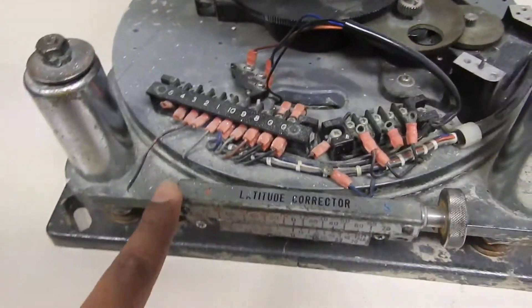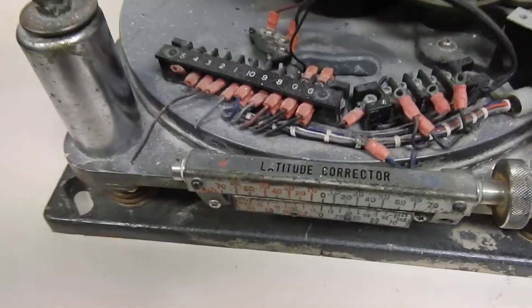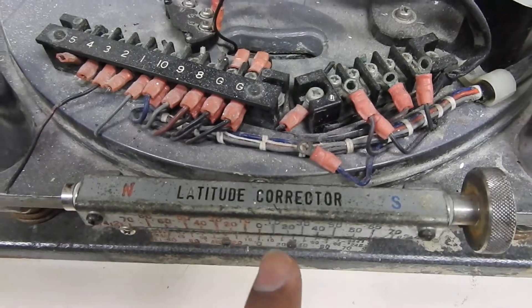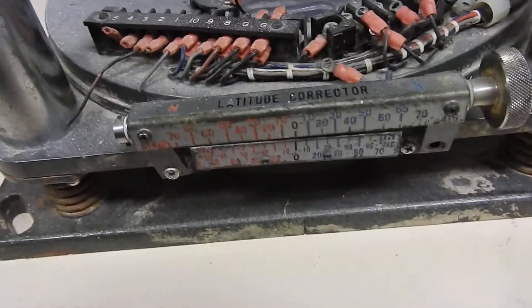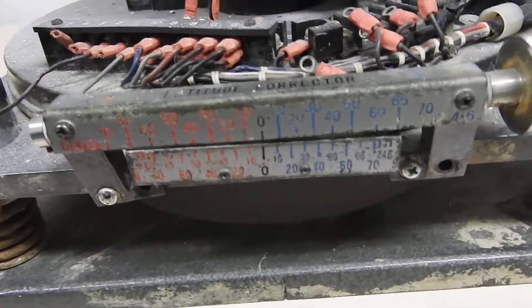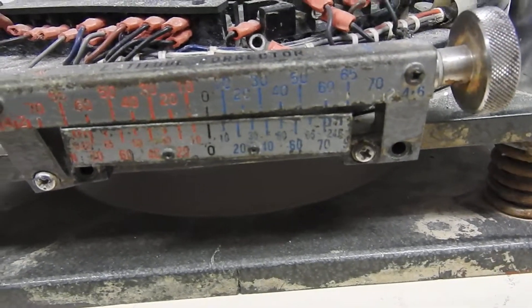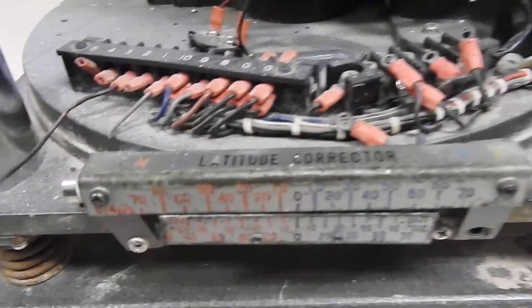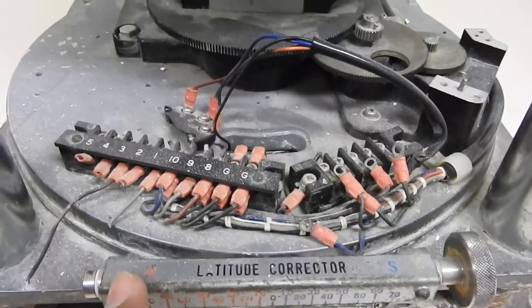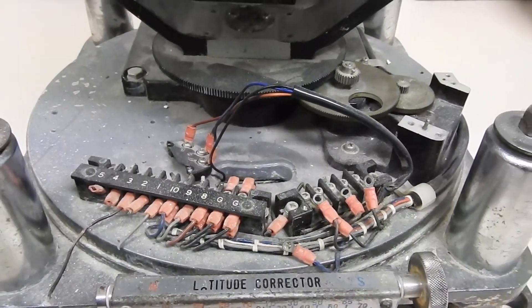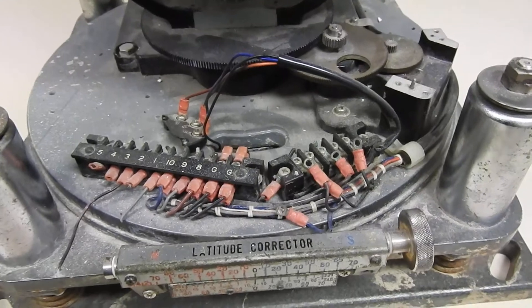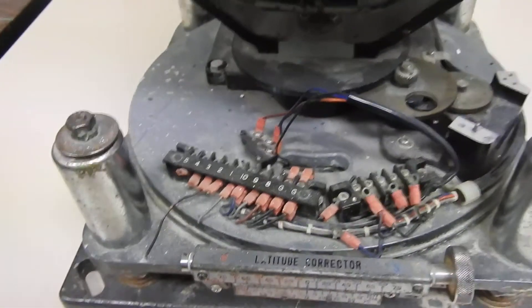Then what you also see is the latitude corrector. You can see on top here, it's written latitude corrector, and this compensates for the latitude correction. So basically what this means is you can see the markings here as well, and the north and south written as well. You have the north here, south here written, marked with red and blue colors.